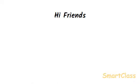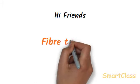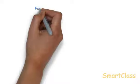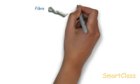Hi Friends. Today we will study Fiber to Fabric. A fiber is a very thin thread-like strand from which cloth is made. Fabric is made by knitting or weaving long twisted threads called yarns, which are made from fibers.